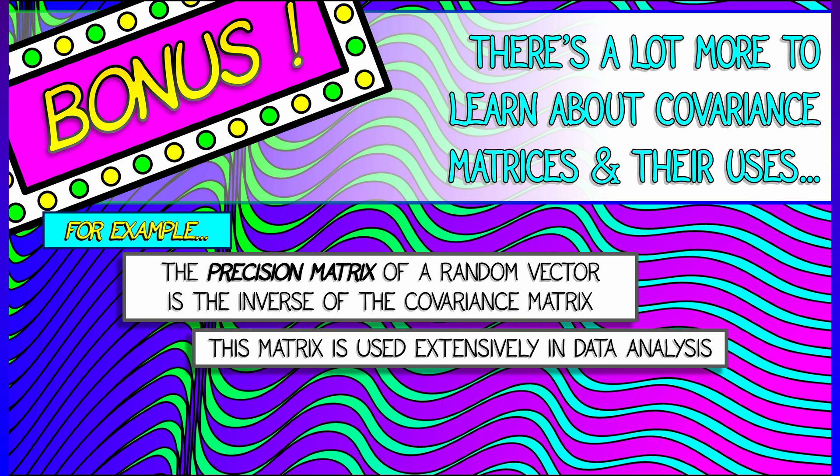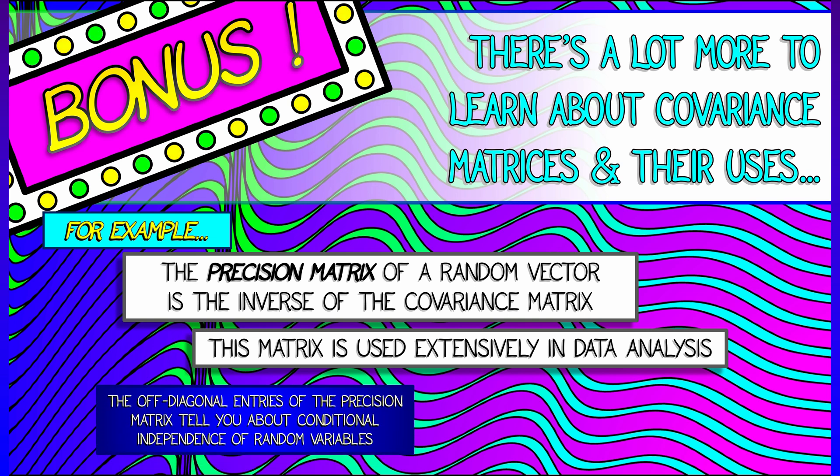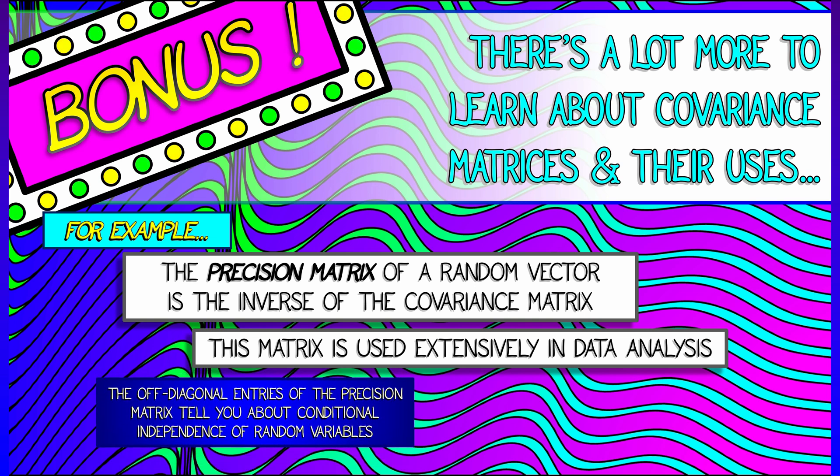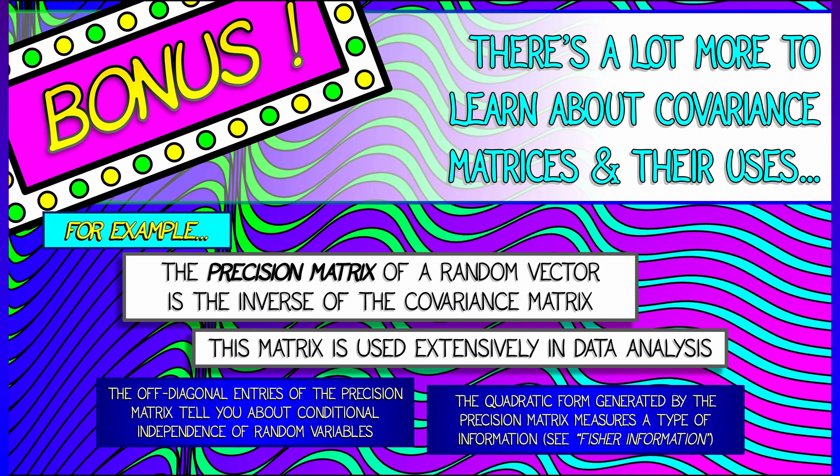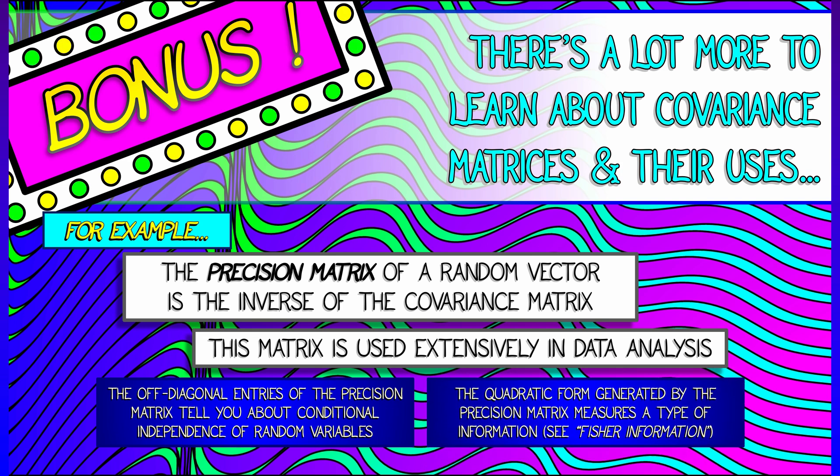Now, this is bonus time. We don't need to know a lot about this. But I will tell you that the off-diagonal entries of the precision matrix are telling you something about conditional independence of random variables.